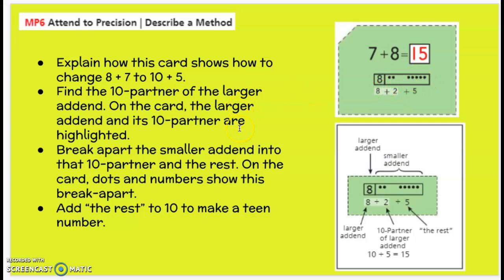So find the 10 partner of the larger addend. So 8 is the larger addend, 8 and 2 makes 10. And then the rest of that 7, if we took 2 off, the rest of it would be 5. So 8 plus 2 plus 5 is 15, which is 8 plus 7, or 7 plus 8. So we broke apart the smaller addend into the 10 partner and the rest. On the card, the dots and numbers show this break apart. Add the rest to the 10 to make the teen number.